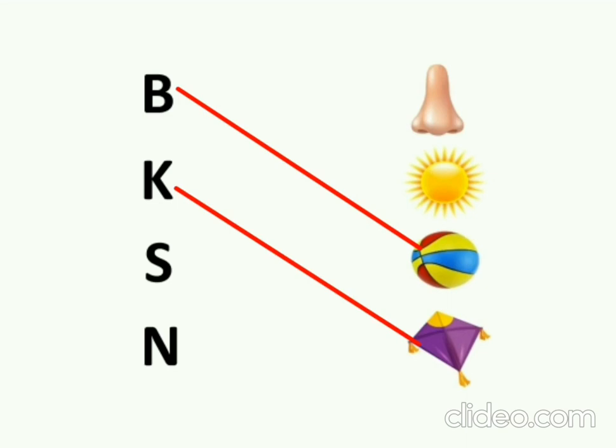The next letter is capital S. Sound of S is S. Sun. S for Sun. We will match S with Sun. The next letter is capital N. Sound of N is N. Nose. So N for Nose. We will match N with Nose.